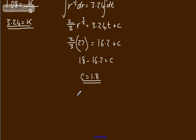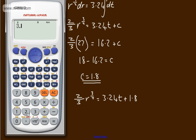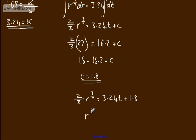So let's put all of this back together. We can say now that 2 thirds r to the 3 over 2 will be equal to 3.24t plus 1.8. So let's go ahead and just tidy this up slightly. If you're working with fractions, it will be slightly neater. So what's 3.24 divided by 2 thirds? 4.86. So we're going to have r to the power of 3 over 2 is going to be 4.86t, and then we're going to have plus 2.7.